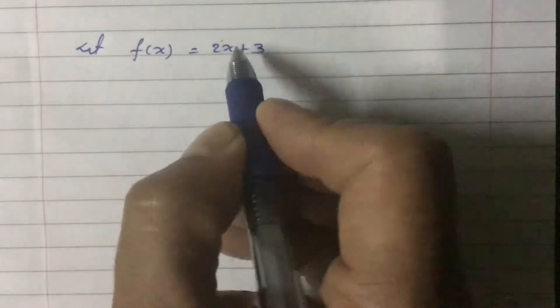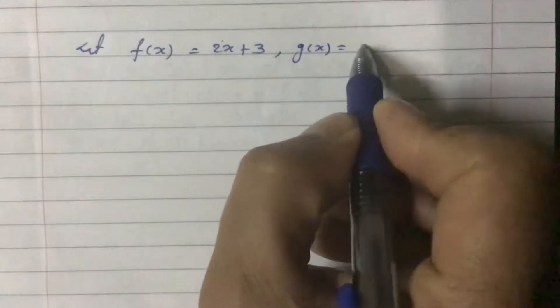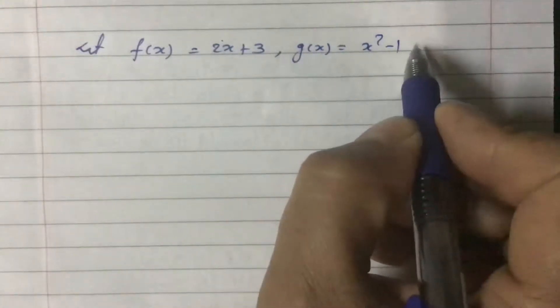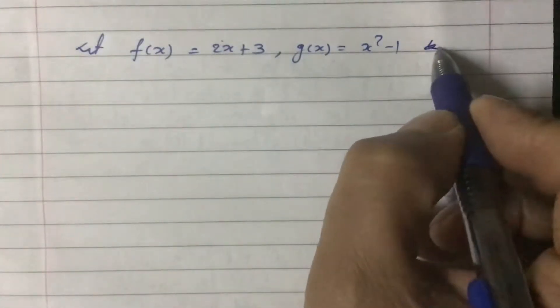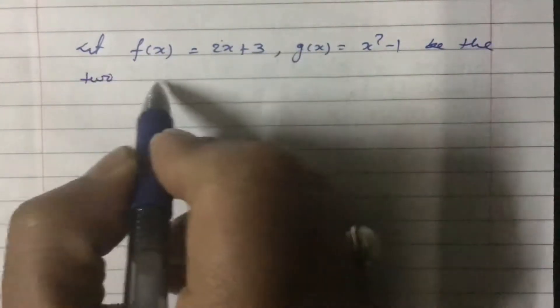In case of combination of functions, let's suppose that f(x) equals 2x plus 3 is one of the function, and g(x) equals x squared minus 1 be the two functions.